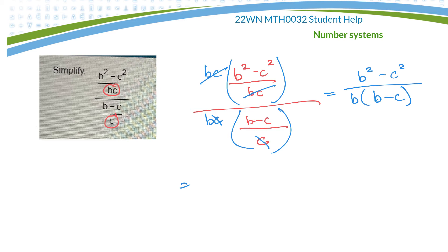Okay, now that top thing is the difference of squares. So it's b minus c, b plus c, and the bottom is b times b minus c.